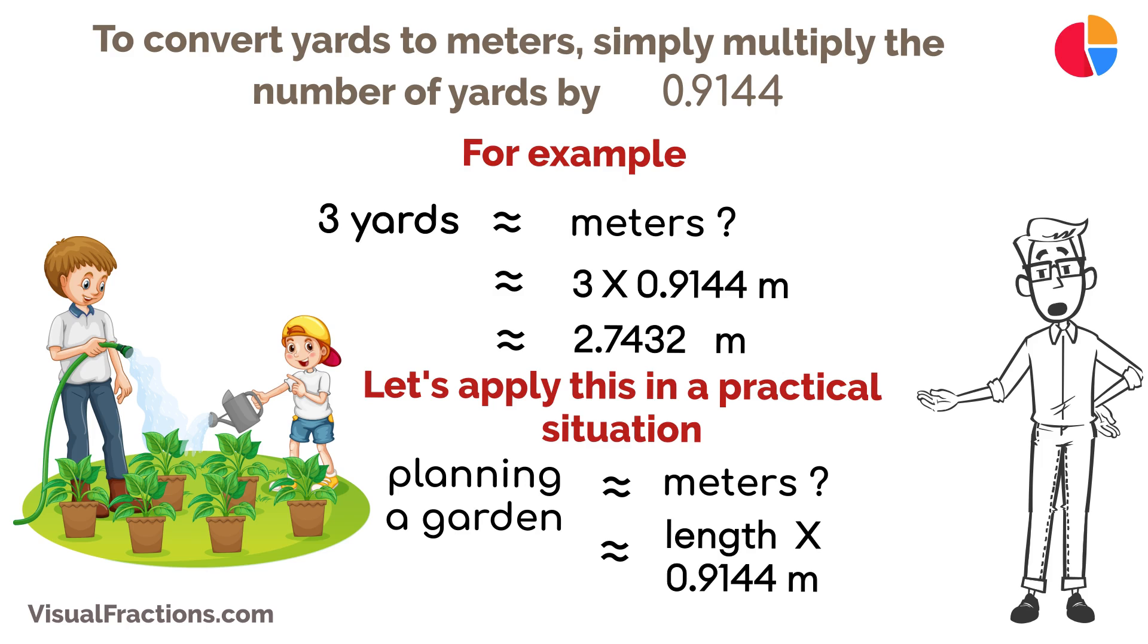And there you have it. Converting yards to meters is straightforward when you remember that 1 yard equals 0.9144 meters. This knowledge will allow you to work efficiently with both imperial and metric measurements in a variety of settings.